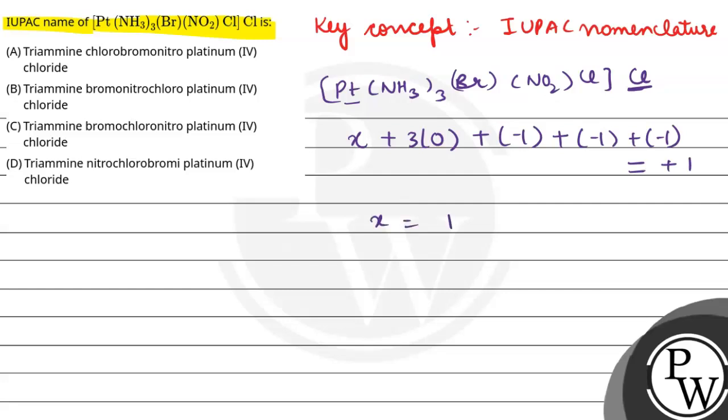So X is equal to 1 plus 3, that means plus 4. So platinum is plus 4. According to all, we have platinum oxidation state plus 4.